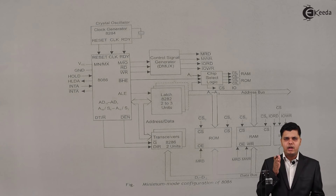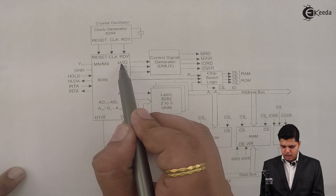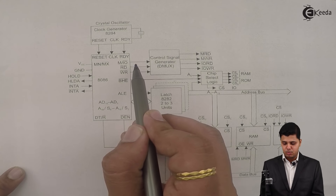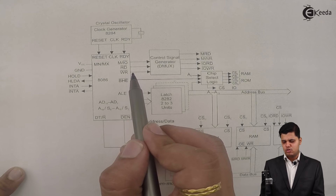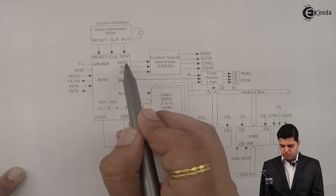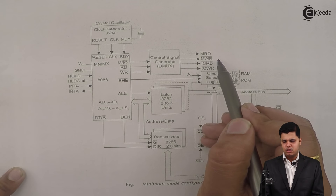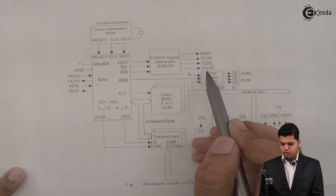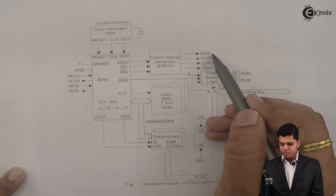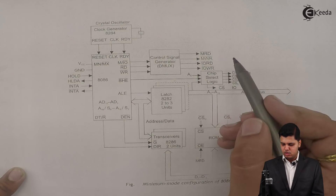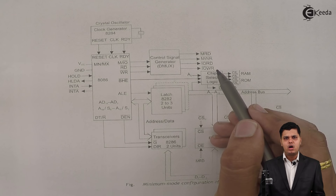When an operation is performed, we need to understand how it is divided into parts and how those parts are represented. First, there is the M/IO bar, which is an output pin of the 8086. Then there is RD bar and WR bar. The combination of M/IO bar and RD bar forms the MRD bar — the memory read signal. Similarly, MWR bar is the memory write signal. The third is IO read bar and the fourth is IO write bar. When these signals are initiated, the respective operations are performed: MRD bar for memory read, MWR bar for memory write, IO read bar, and IO write bar.